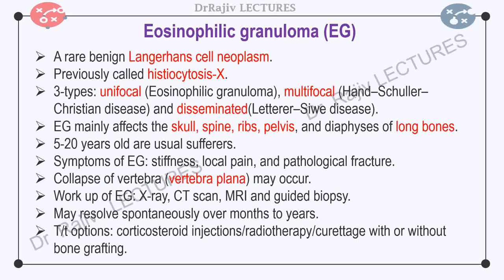Eosinophilic granuloma, or Langerhans cell histiocytosis, is a rare benign Langerhans cell neoplasm. Langerhans cells are antigen-presenting cells derived from dendritic cells. It was previously called Histiocytosis X because of its unknown etiology. There are three types: unifocal, multifocal, and disseminated. The multifocal disease is called Hand-Schüller-Christian disease and the disseminated disease is known as Letterer-Siwe disease. The disease may affect any organ system in the body. The unifocal disease or eosinophilic granuloma mainly affects the axial skeleton, that is the skull, spine, ribs, pelvis, and diaphysis of long bones. Single or multiple lesions may be present.